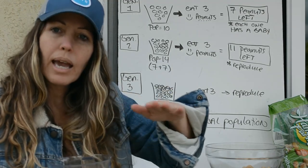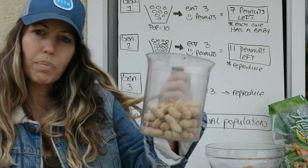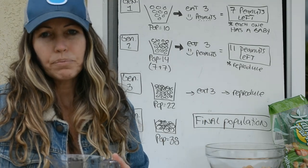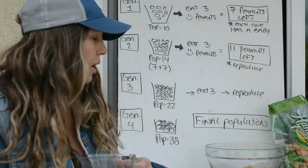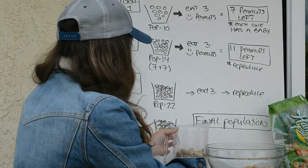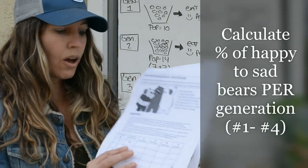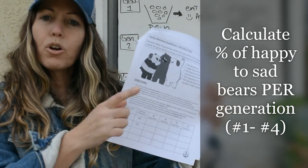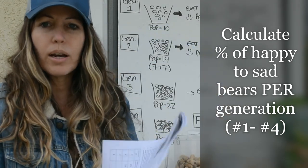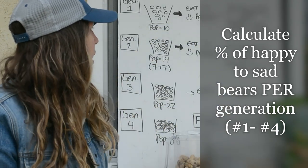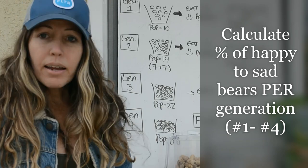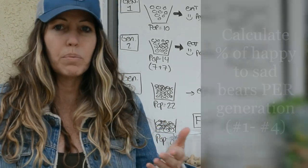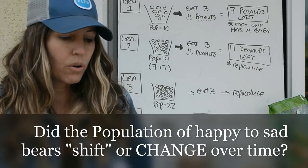At this point, count your data — how many happy and sad do you have — then stop the lab. Calculate all the percentages from your happy and sad counts. For example, if you have five happy out of a population of ten, that's 50%.